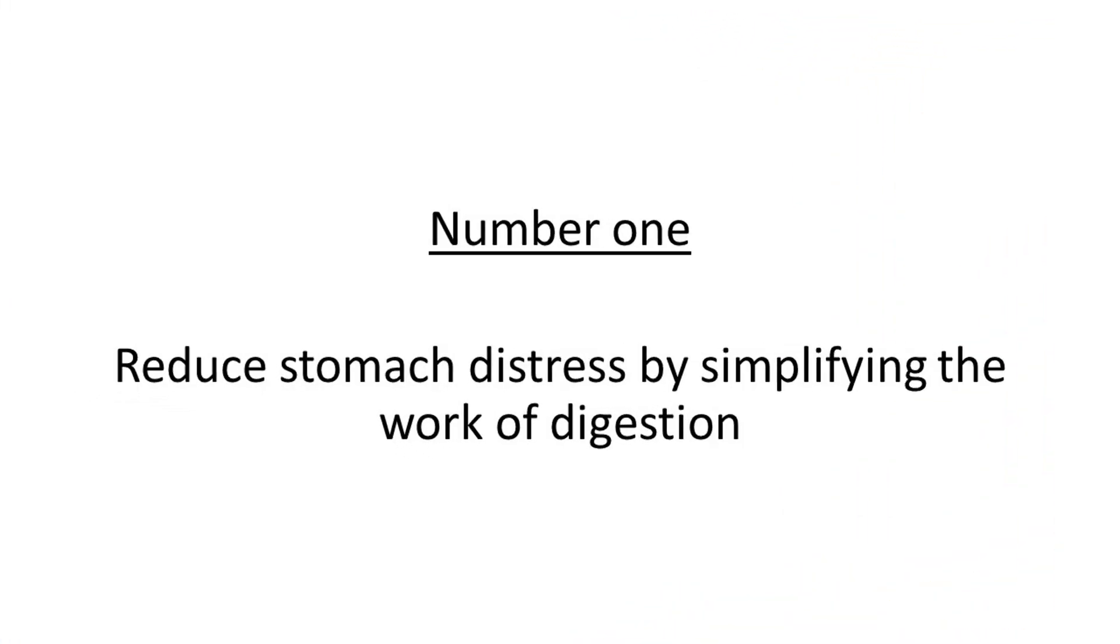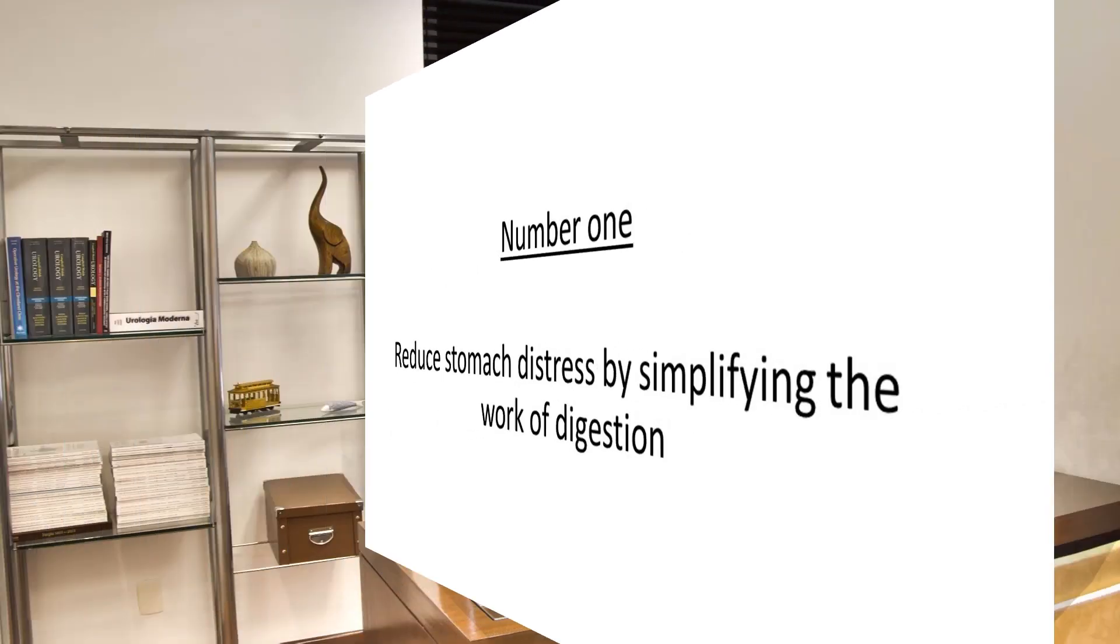Each class of food requires a specific stomach environment for optimal digestion. For example, pepsin and increased hydrochloric acid or stomach acid is necessary for protein digestion. While starches require amylase and less stomach acid.